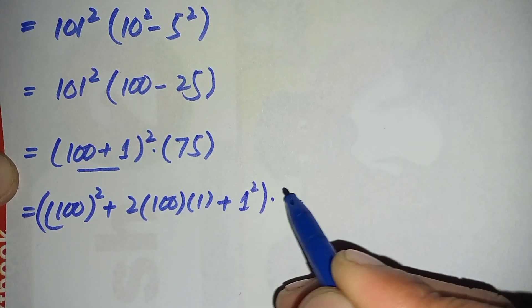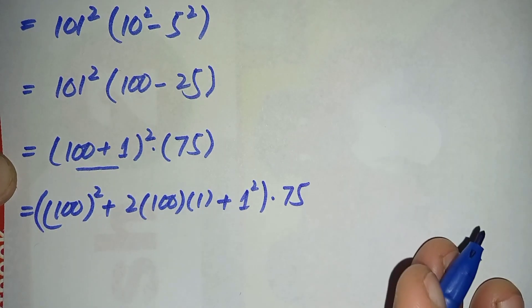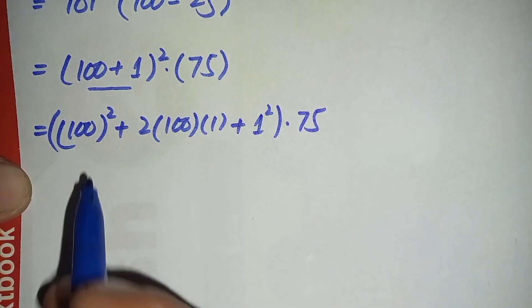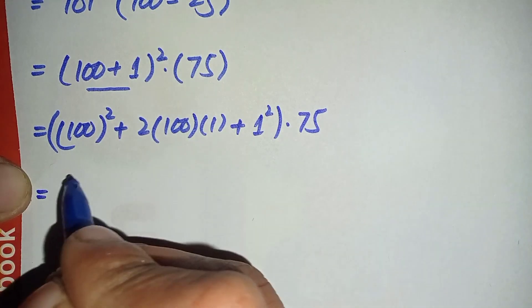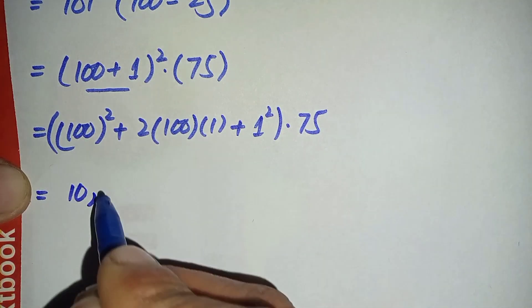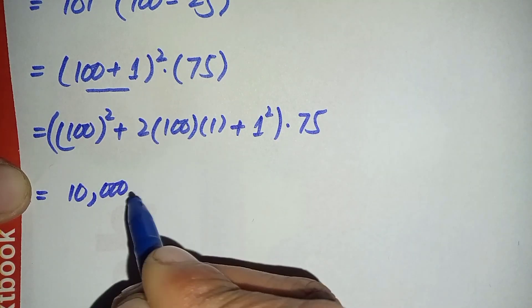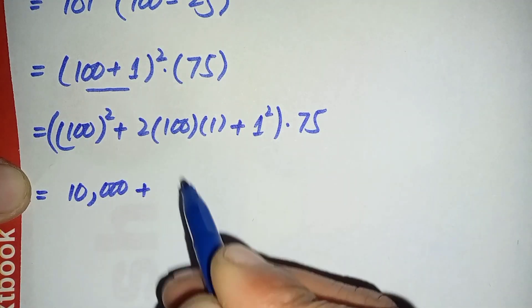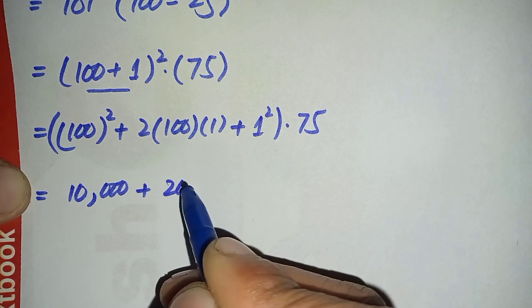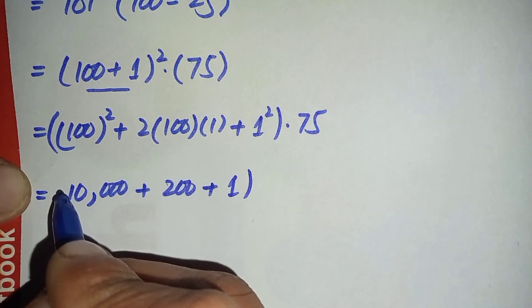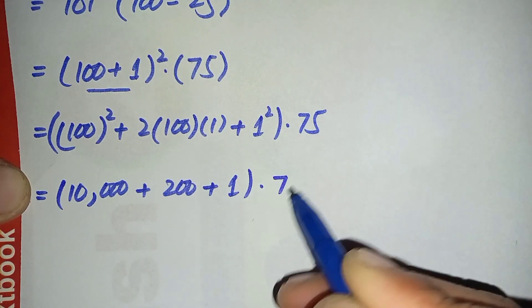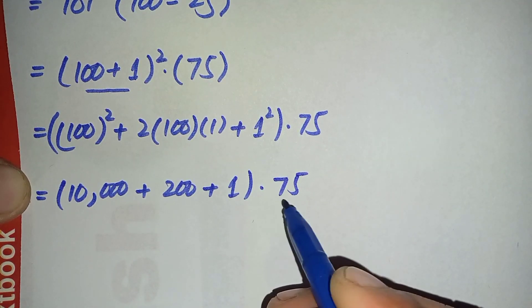So 100² is 10,000 plus 100 times 1 is 200 plus 1² is 1, times 75. Now we will multiply this 75 with all numbers in the parentheses.